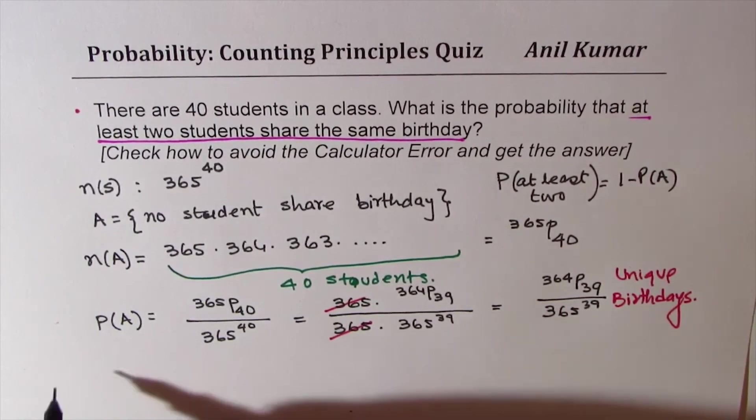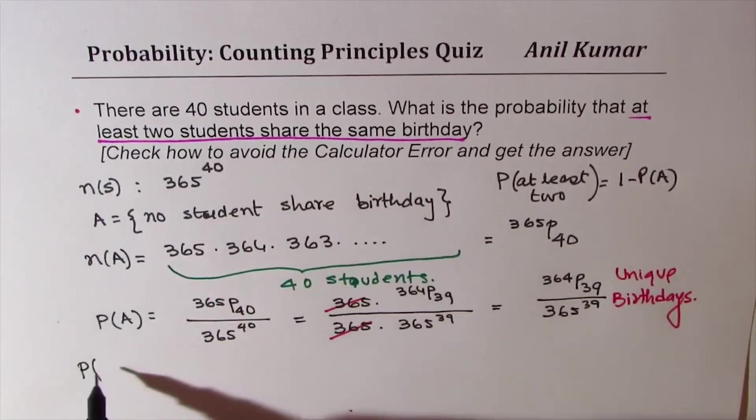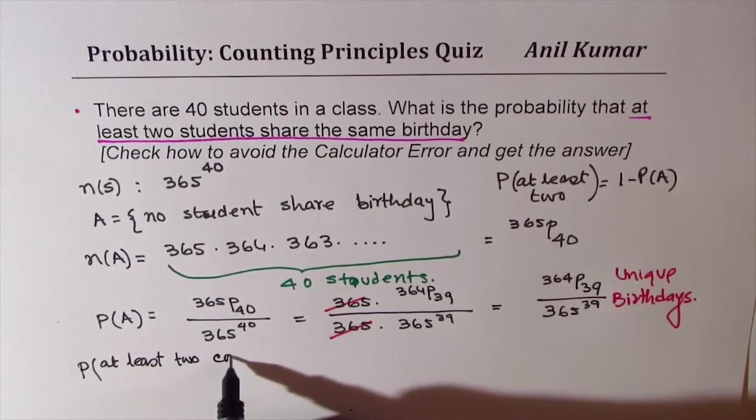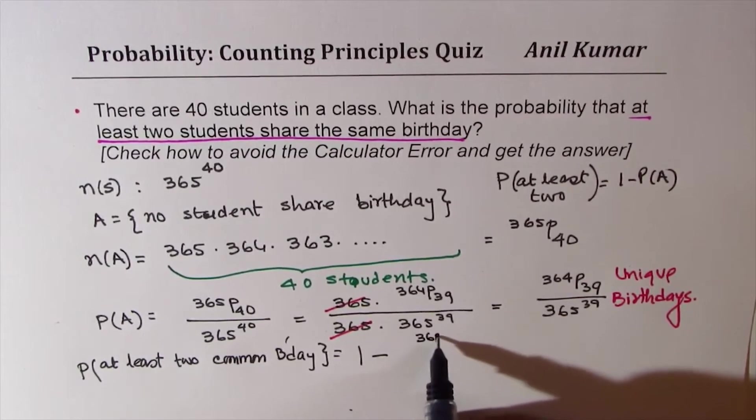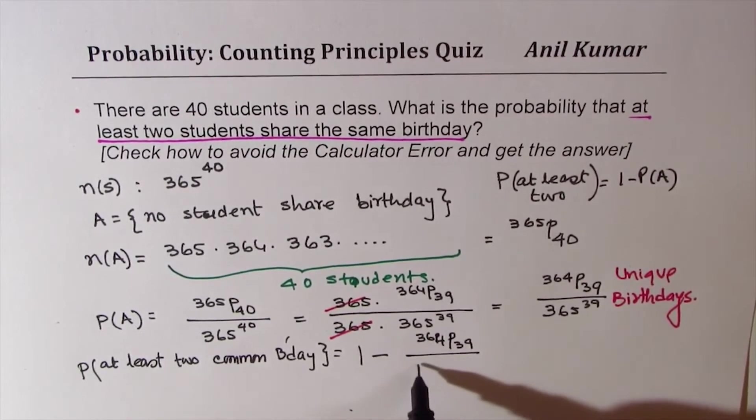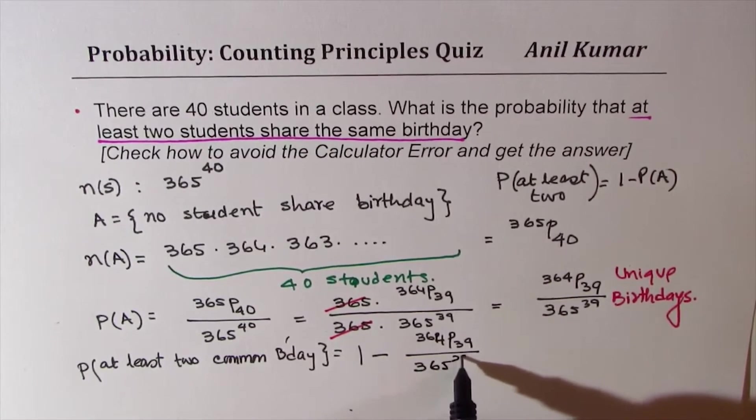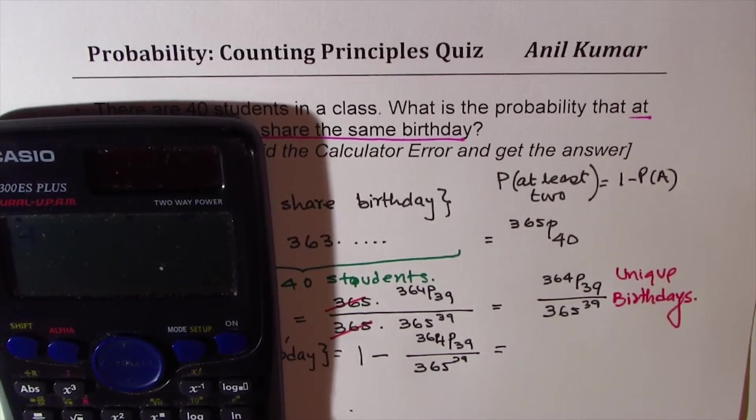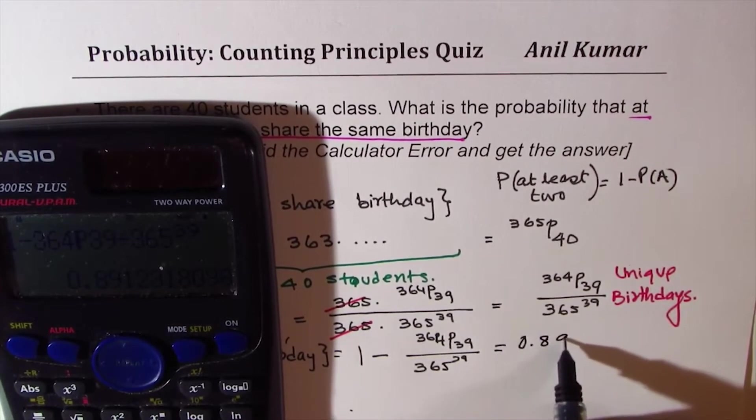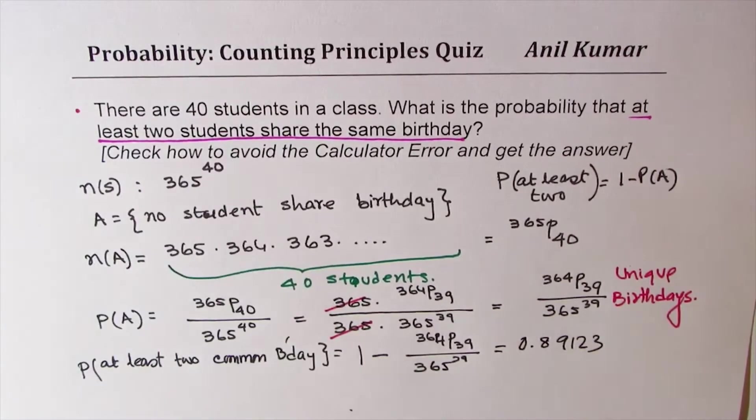So let's find our answer. That is the probability of at least two common birthday, which is one minus all this, which is 364 permutation 39, 365 to the power of 39. So let's calculate everything in one shot. So we get one minus 364P39 divided by 365 to the power of 39 equal to, so we get a number which is 0.89123 and so on. Do you see that also? So we are able to calculate.